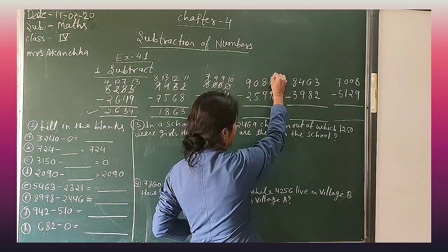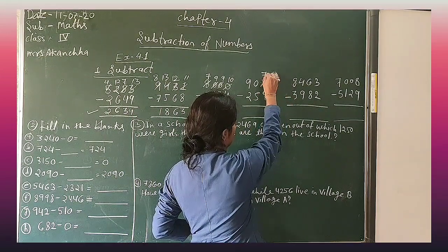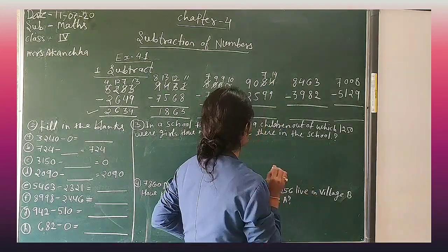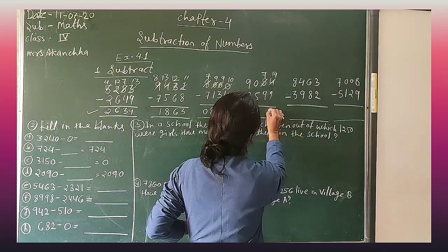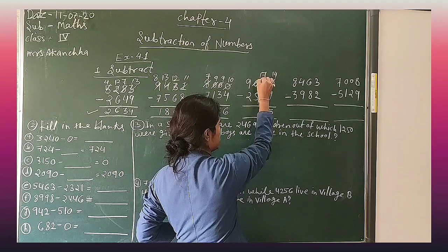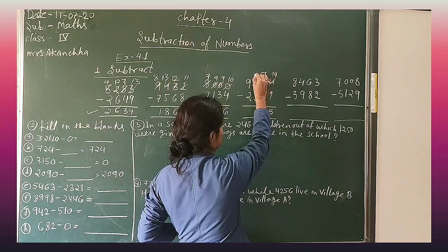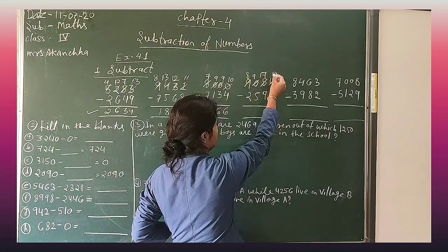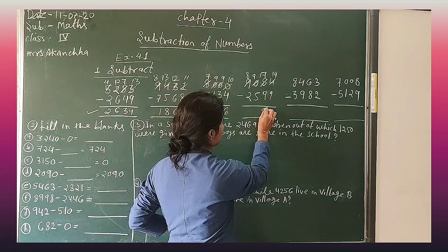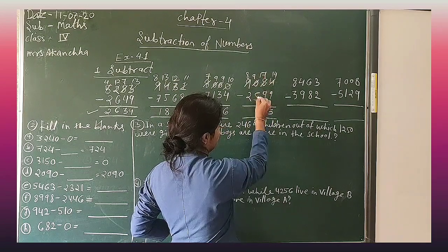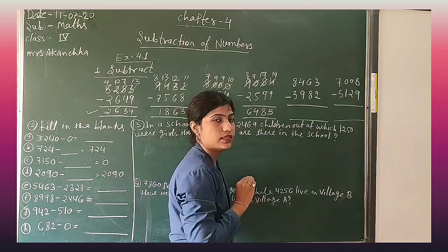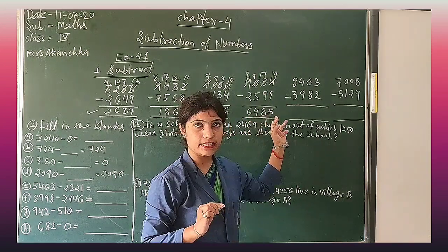4 minus 9 — borrow. 14 minus 9 is equal to 5. 7 minus 9 — again take borrow. Here: this is 9, this is 9, this is 9, this is 8. 17 minus 9 is equal to 8. 9 minus 5 is equal to 4. And 8 minus 2 is equal to 6. Your answer is 6485.